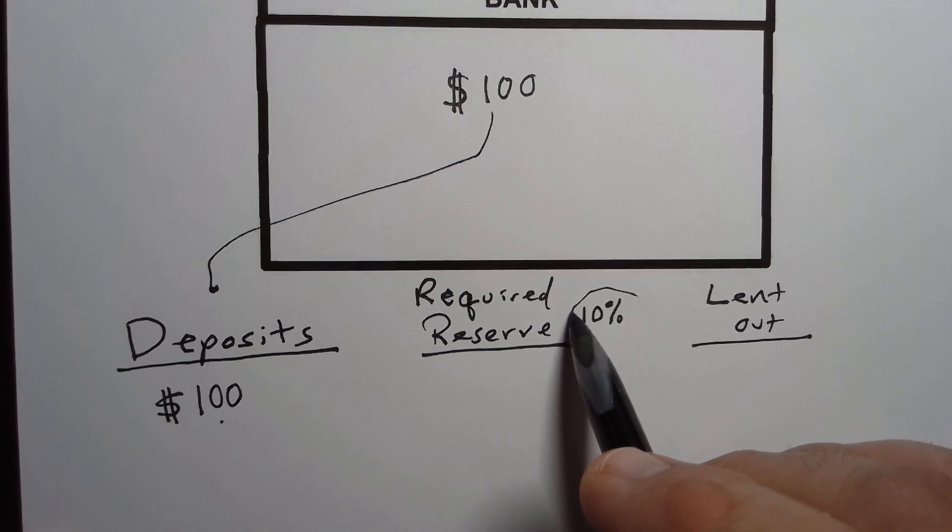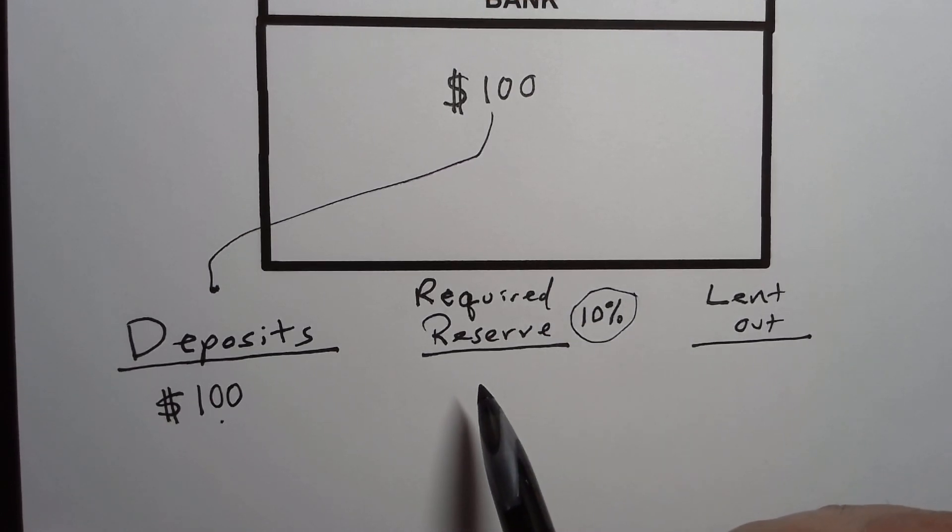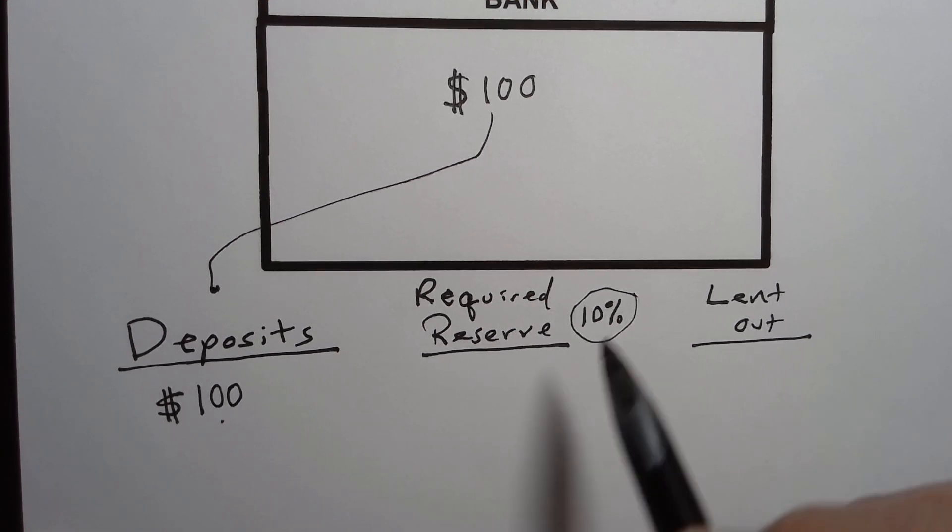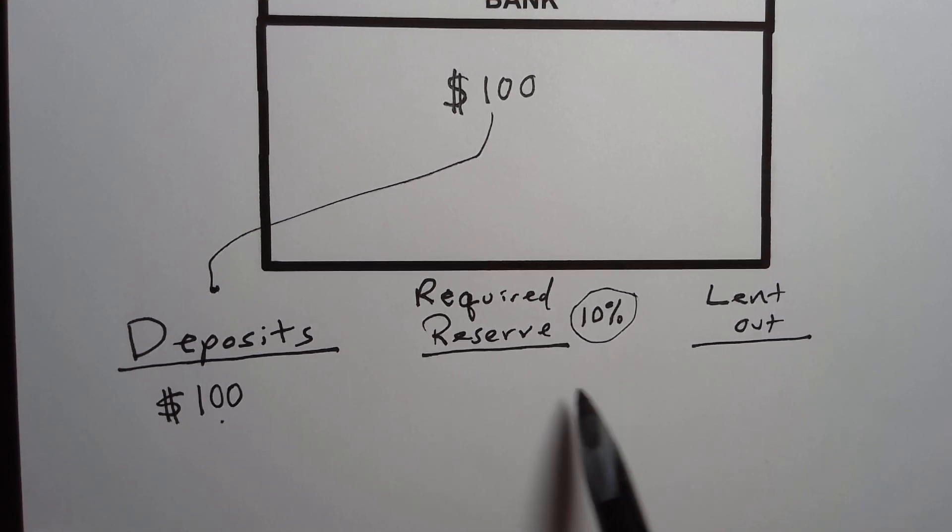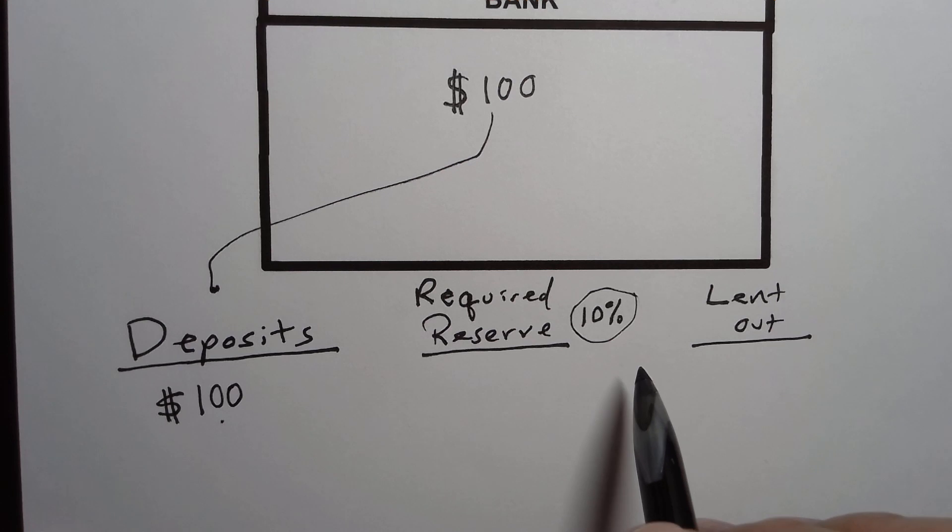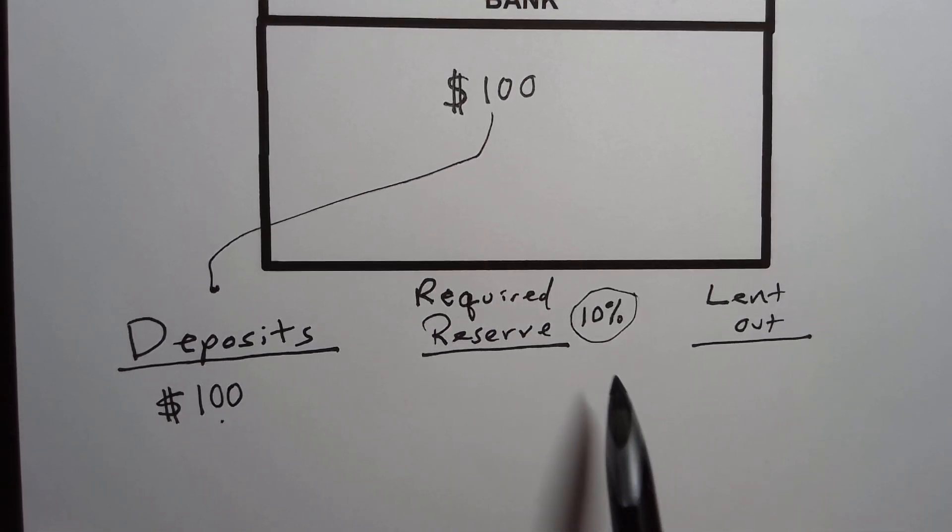This percentage in the United States is generally set by the Federal Reserve. You might have heard of it. The Federal Reserve sets that amount. But there's other legal requirements involved as well. Other countries do this and their central bank may set it. But they also might use fractional reserve banking.